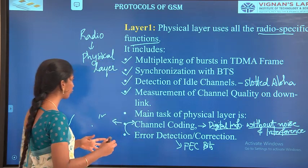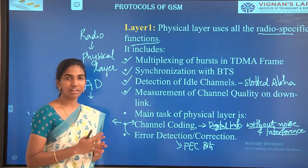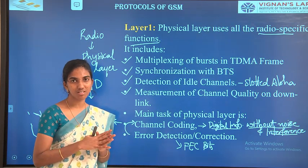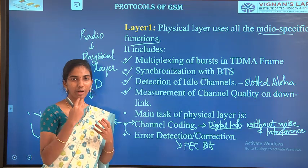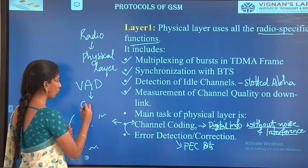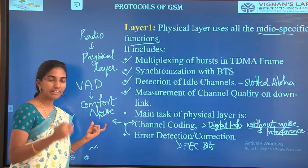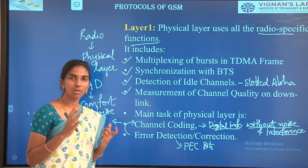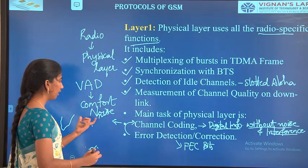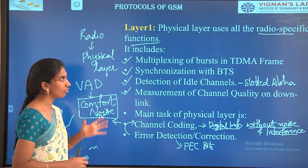Apart from this, we have a special functionality called Voice Activation Detection (VAD). Whenever we make a call, we won't always be speaking — sometimes there is silence. When no data is being transferred in the network, in order to keep the channel active, the network sends a signal called Comfort Noise. If the channel is kept in an idle state, the signal will not be maintained properly. So the service provider adds this comfort noise to assume that some data is being transferred. These are the functionalities of the physical layer.